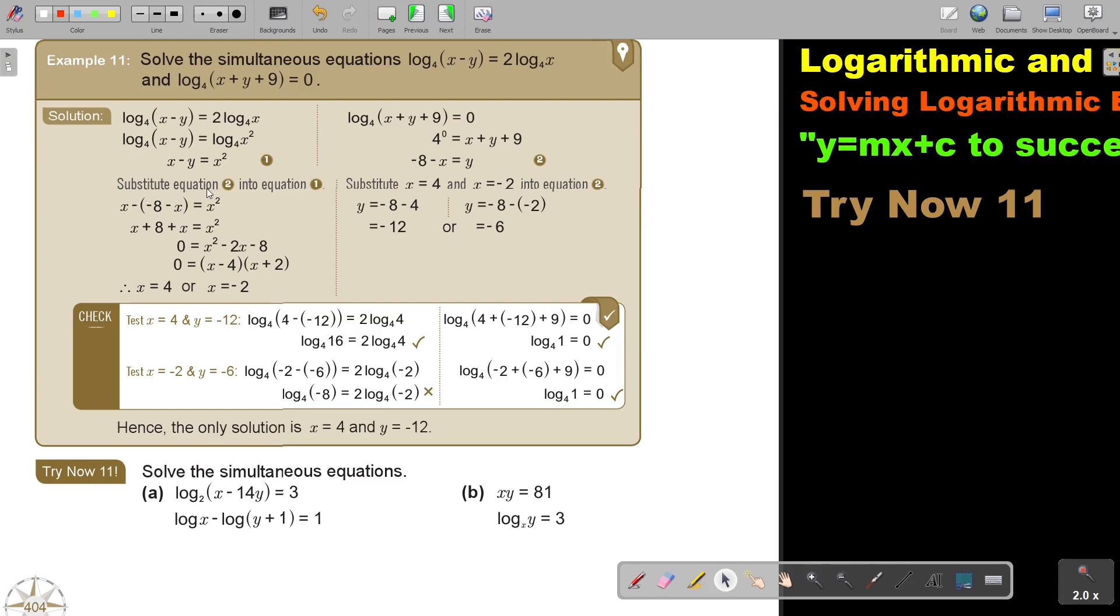So substitute equation 2 into equation 1. I have y, so in the place of y I substitute. Then I come to a quadratic equation. And I solve the quadratic equation. I get x is 4, x is negative 2. And then substitute this in for the first one, this for the second one.